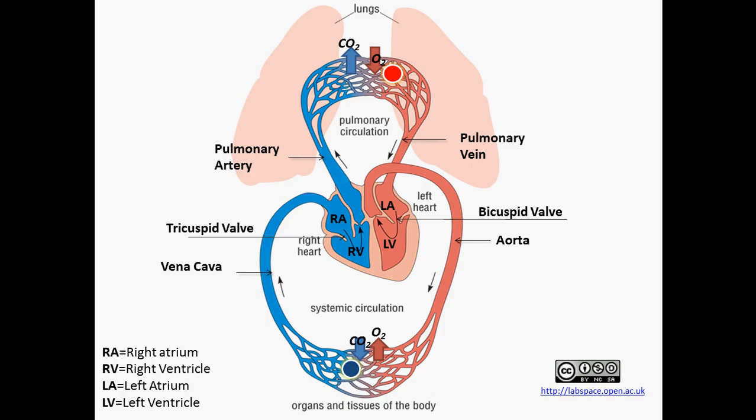Today we are going to be describing two circulations: the pulmonary circulation and the systemic circulation. The pulmonary circulation is the circulation involved between the heart and the lungs. This circulation is necessary to recycle the blood, to pick up the excess carbon dioxide from the blood and put oxygen back into it to make it oxygenated again.